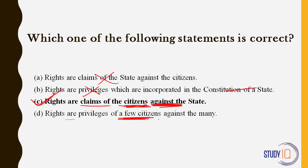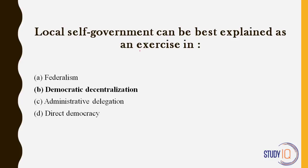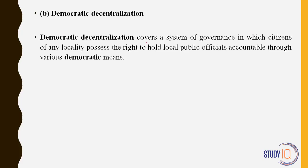Local self-government can be best explained as an exercise in democratic decentralization — not much to discuss here. Democratic decentralization was the purpose of local self-government. The 73rd and 74th amendments gave powers to local bodies — municipalities, urban local bodies, and panchayats in India. Democratic decentralization covers a system of governance where citizens of any locality possess the right to hold local public officials accountable through various democratic means.